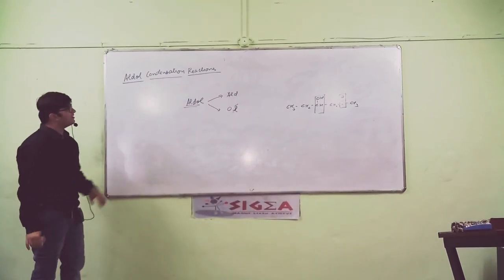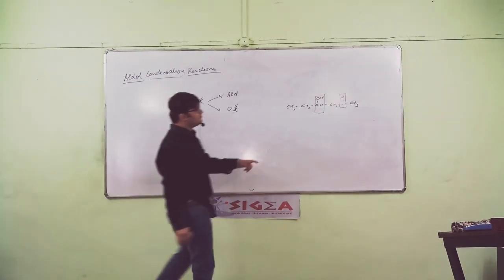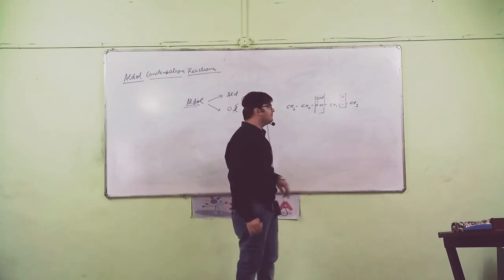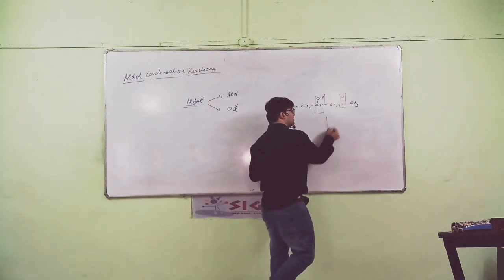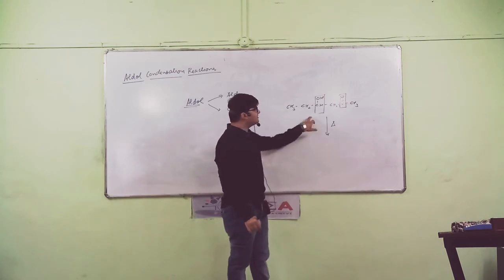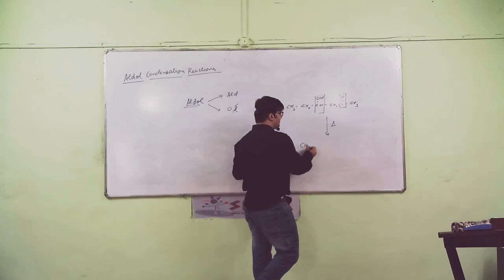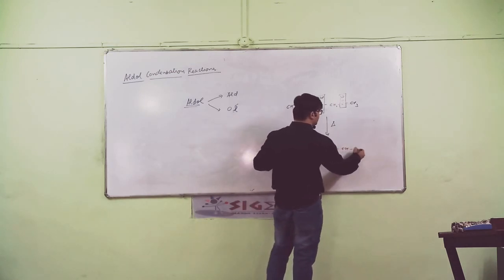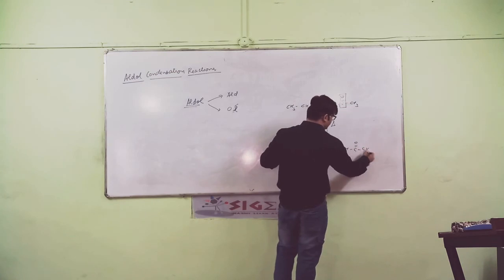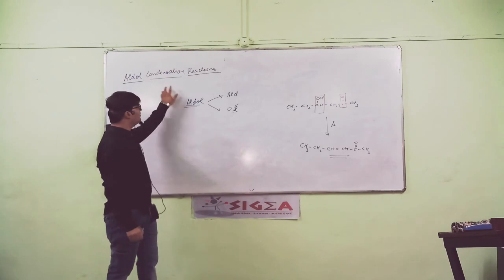Now, what do we do? Aldol is heated to give the final product. Our compound is heated. We need to heat this compound. Then we get an unsaturated carbonyl compound, like CH2 double bond CH, double bond O. These are reactions from the aldol.